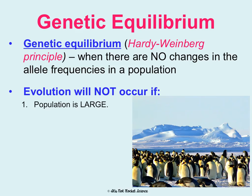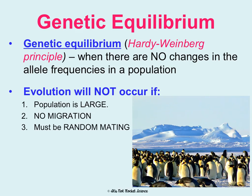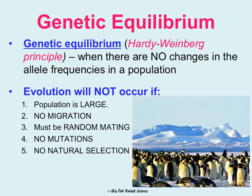First, the population has to be very large in order to eliminate the effects of potential genetic drift. Second, there can be no migration, in order to eliminate the effects of potential gene flow. Third, there has to be random mating — no selection whatsoever in your mating — in order to negate the effects of potential sexual selection or non-random mating. Fourth, there can be no mutations, because we know mutations create variation. And fifth, there can be no natural selection — no traits can be more favorable for survival than others.